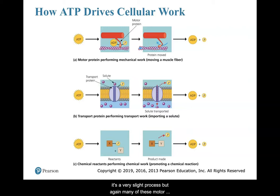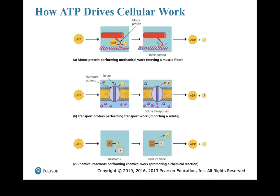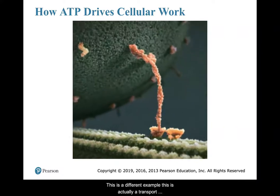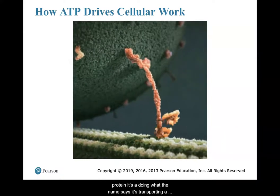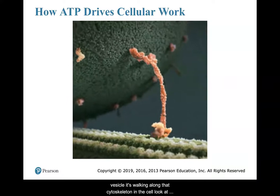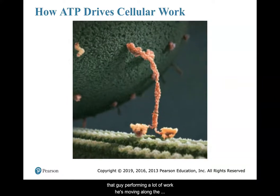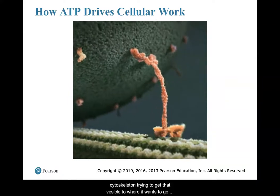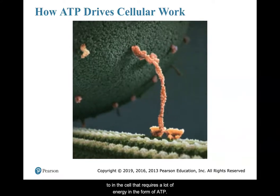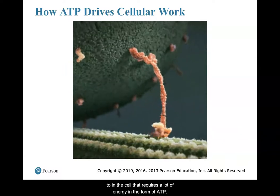It's a very, very slight process, but many of these motor proteins overall, using many different ATP molecules — millions of them — work together in order to contract an entire muscle. Here's a different example: a transport protein, which does what the name says — it's transporting a vesicle, walking along the cytoskeleton in the cell. Look at that — it's performing a lot of work, moving along the cytoskeleton trying to get that vesicle to where it needs to go. That requires a lot of energy in the form of ATP.